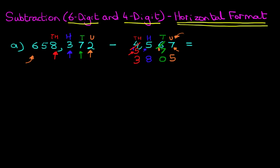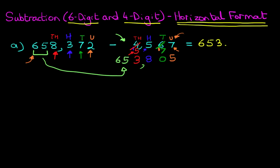Now, how about these last two digits? We've got six and five. Well, there's nothing over here to subtract, so we simply add these two on. Put a comma here, and we have reached our answer — it is 653,805.